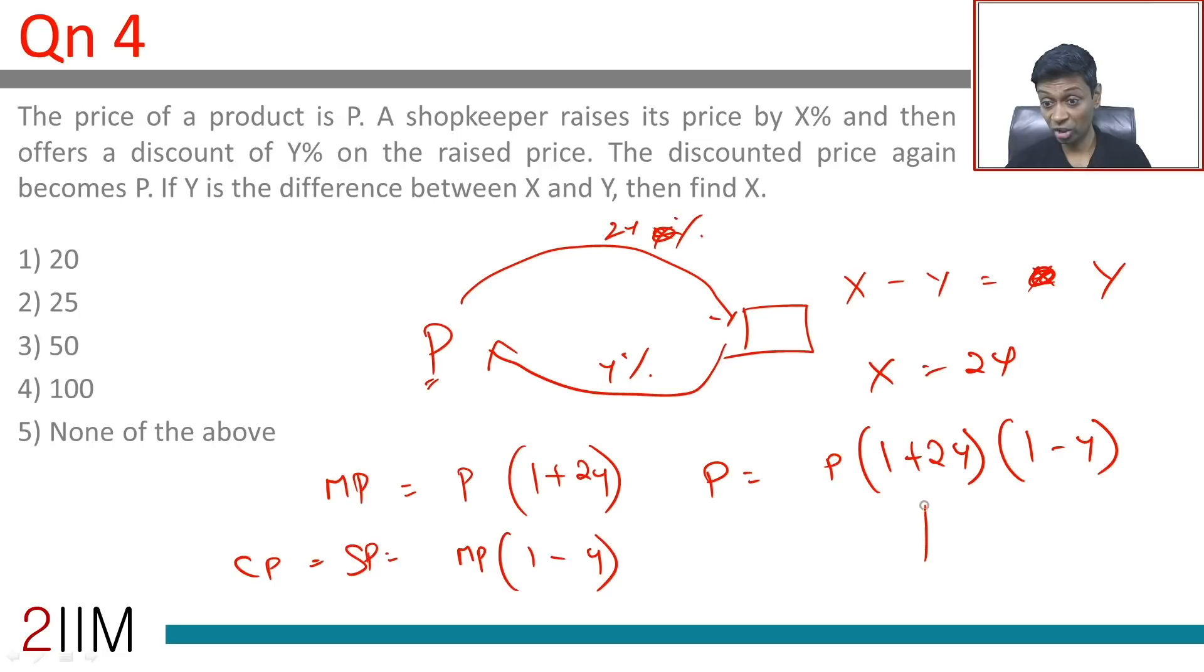You can write this equation down really quickly if you have this topic covered. This entire topic is about how quickly I can get to writing this equation. 1 plus 2Y into 1 minus Y should equal 1.